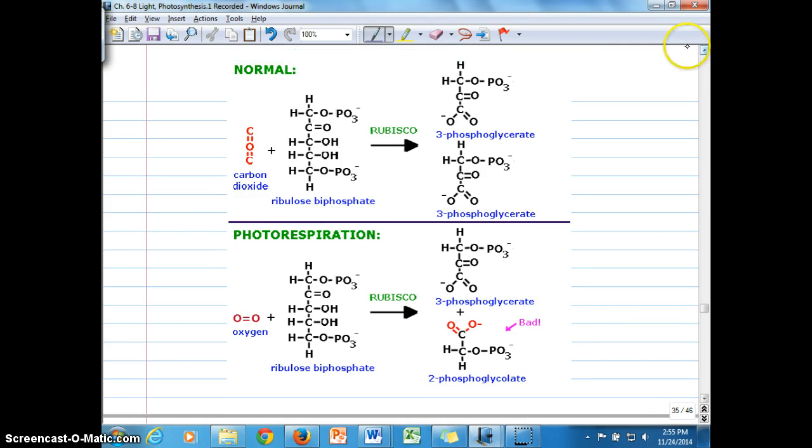Just a little expanded view of part of what we just looked at. But in this diagram, we can see that under normal scenarios, we have that ribulose bisphosphate, ribulose 1,5-bisphosphate, bonding with carbon dioxide and producing two 3-phosphoglycerates, two 3-PGAs.